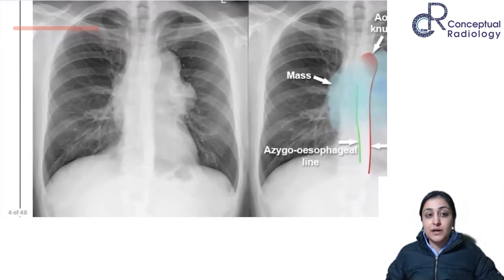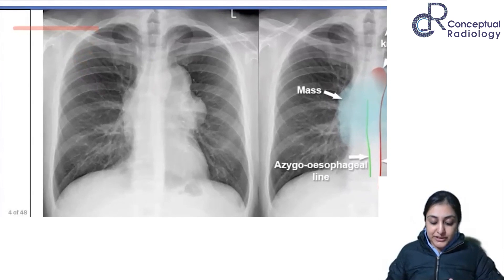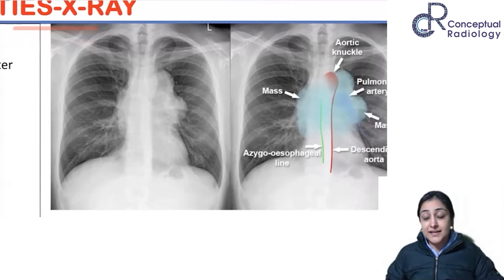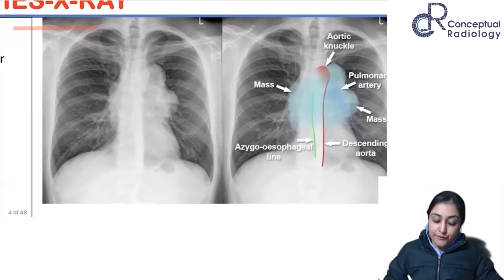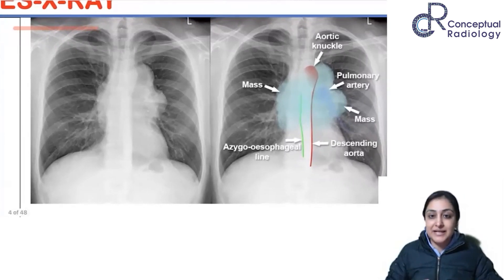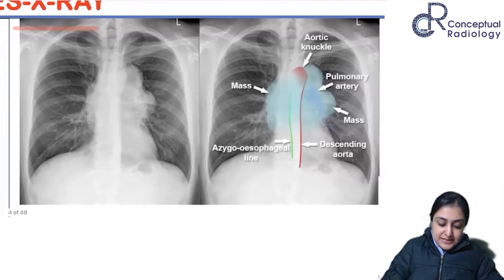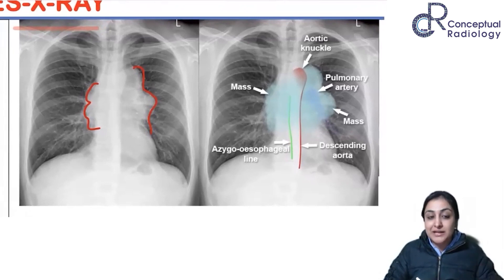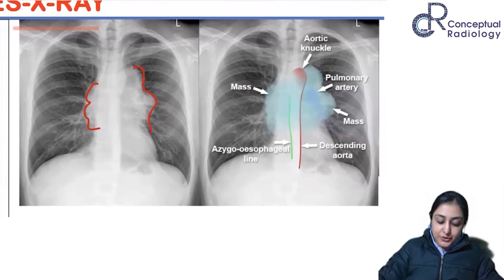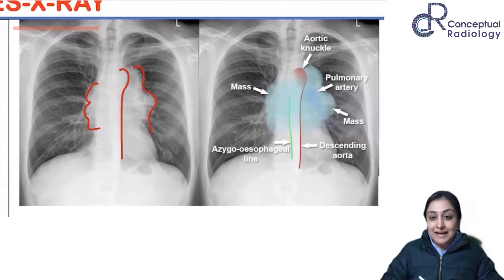The approach when given a mediastinal mass on X-ray follows four questions: first, is there a lesion? Second, is it mediastinal or pulmonary? Third, which mediastinal compartment? Fourth, what are the differentials? The simplest rule: a mass with a broad base toward the mediastinum forming an obtuse angle is a mediastinal mass. If the mass is located on both sides of the mediastinum, a pulmonary lesion cannot do that — so it must be mediastinal.